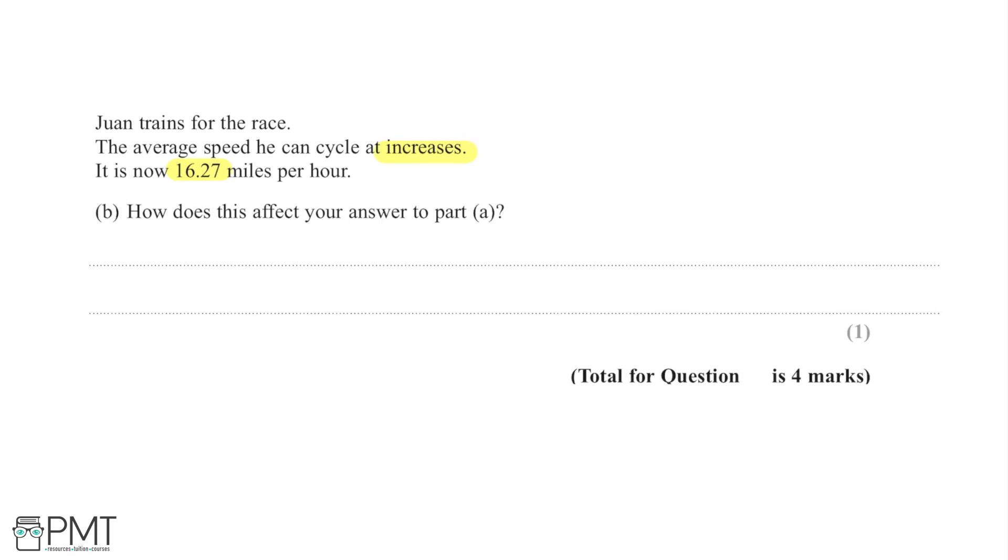To work this out, I'm going to look at the equation we used. I used the fact that time equals distance over speed. We're told that the average speed, the s in this equation, is going to increase after his training. An increase in speed is going to cause a decrease in time because time and speed are inversely proportional. So time is proportional to 1 over speed. As speed increases, time's going to decrease.